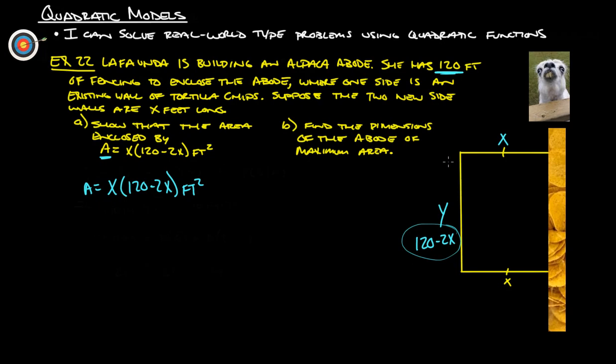Now the area would then be X times 120 minus 2X. And look, there we go. Area equals X times 120 minus 2X square feet. So the area will be that. So we got exactly that. We showed it. Please, if you're stuck on this, make sure that you ask questions when we meet together.